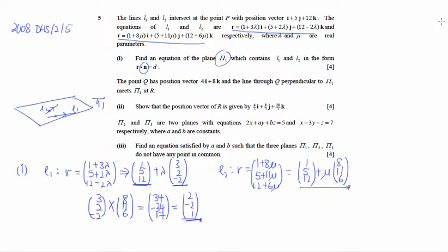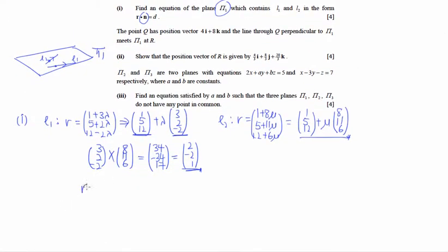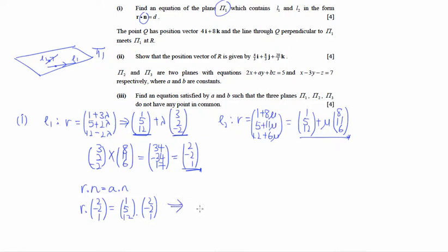According to the formula r·n = a·n, we have r·(2, −2, 1) equals a·(2, −2, 1), where a is any point on the plane. Both lines share the common point (1, 5, 12), so we use that. Computing the right-hand side: 2(1) minus 2(5) plus 1(12) = 2 − 10 + 12 = 4. So the equation of π1 is r·(2, −2, 1) = 4.